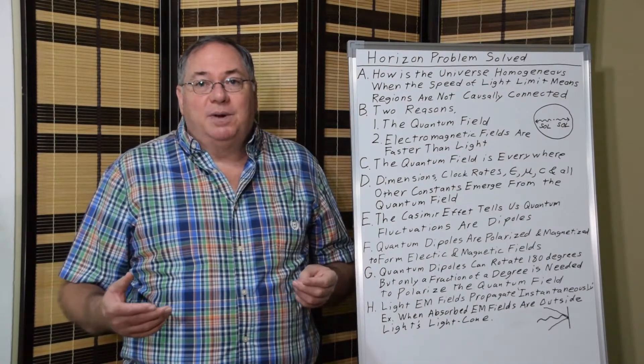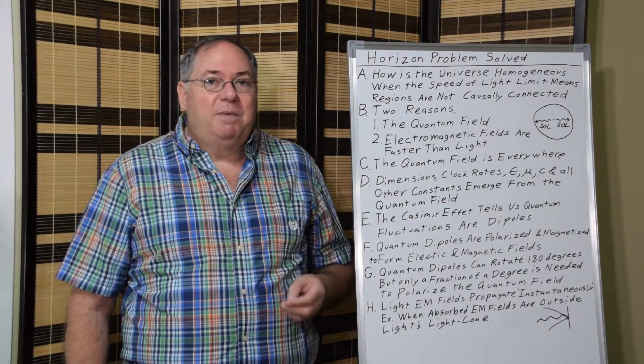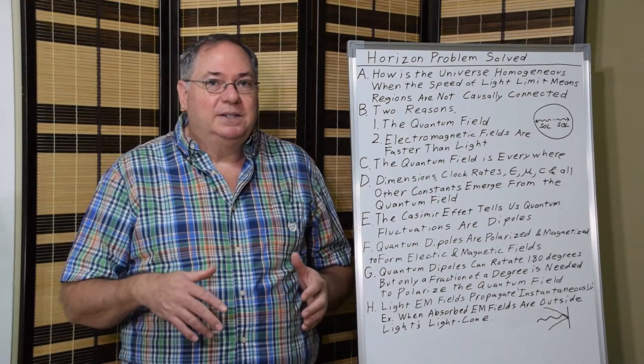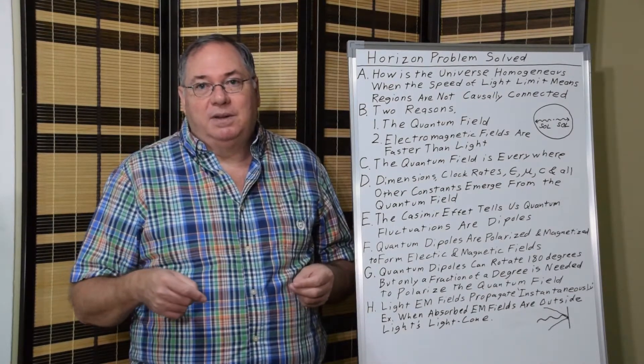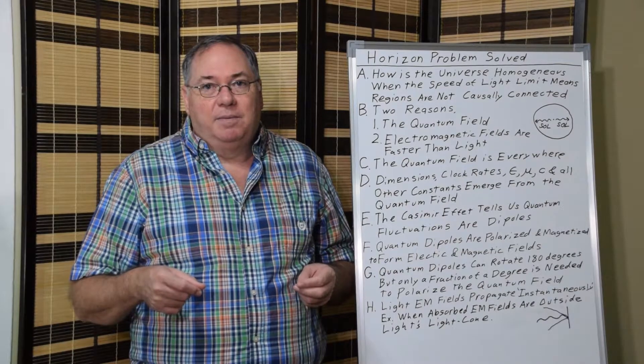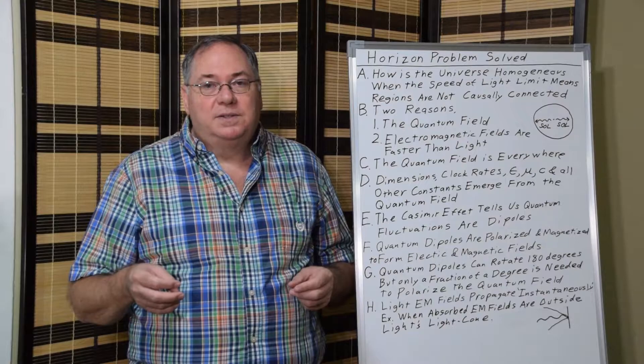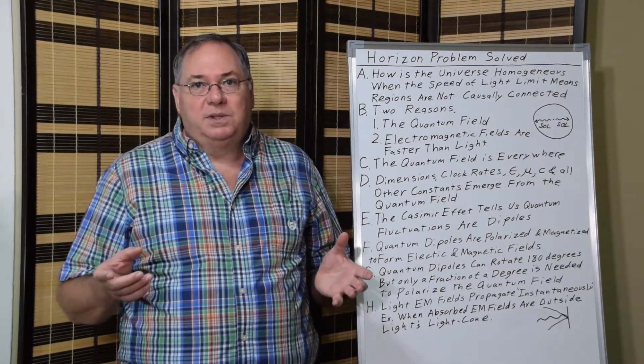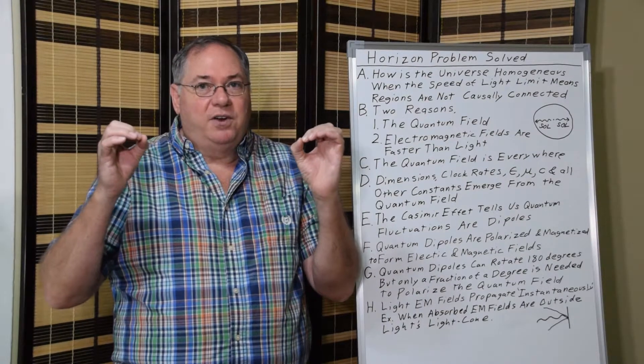So, that solves the horizon problem. There never really was a problem. The problem came about because people overthink the speed of light limit. And they didn't realize that Maxwell's equations require that the speed of light limit be not applied to electric and magnetic fields. And you can see that if you consider Coulomb's law. In Coulomb's law, you have two charges. If they're like charges, they repel. If they're opposite charges, positive and negative, they attract.